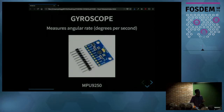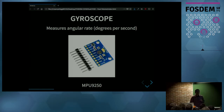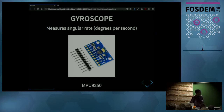The accelerometer alone is not enough to get us the angle. So we also have a gyroscope on the robot. A gyroscope measures the angular rate — the speed at which the sensor is rotating. This is perfect because with it we can measure exactly how the angle is changing. The same sensor, the MPU-9250, has both an accelerometer and a gyroscope.